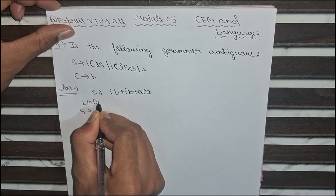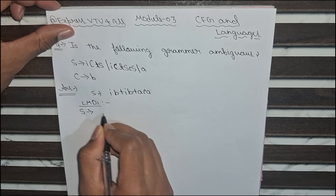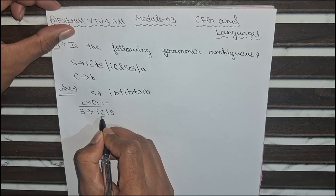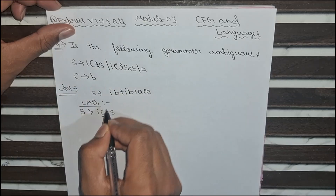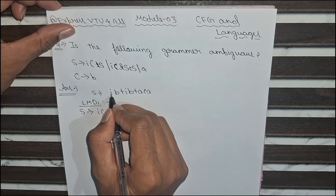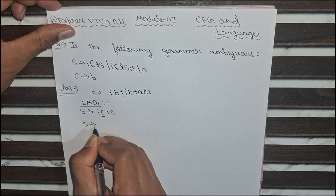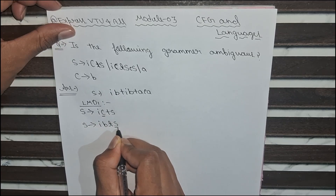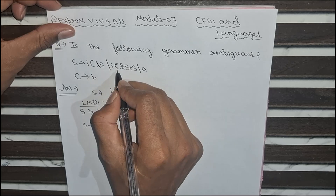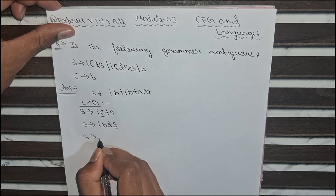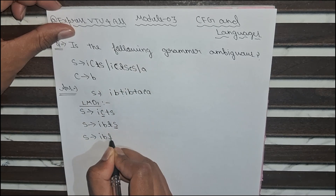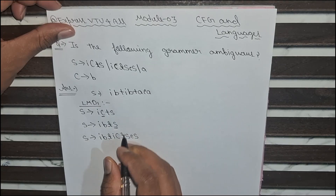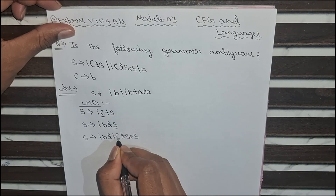First, we will go with leftmost derivation 1, which we will name LMD1. So S → i c t S. We have to put this c as b because we want b after i. So S = i b t S. Now we substitute this S as i c t S e S, giving S = i b t i c t S e S. From the left side this variable comes next.